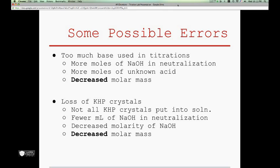For one, NaOH was probably added past the endpoint. This might have led to the belief that more moles of NaOH were required to neutralize the acid, and that more moles of tributic acid were present in each sample. Consequently, the molar mass of the unknown for this trial would have been decreased significantly.